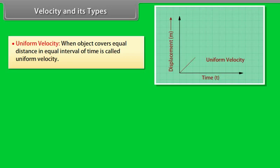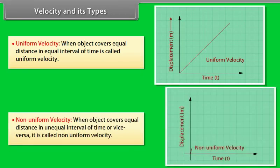Uniform velocity: when an object covers equal distances in equal intervals of time, it is called uniform velocity. Non-uniform velocity: when an object covers equal distances in unequal intervals of time, or vice versa, it is called non-uniform velocity.